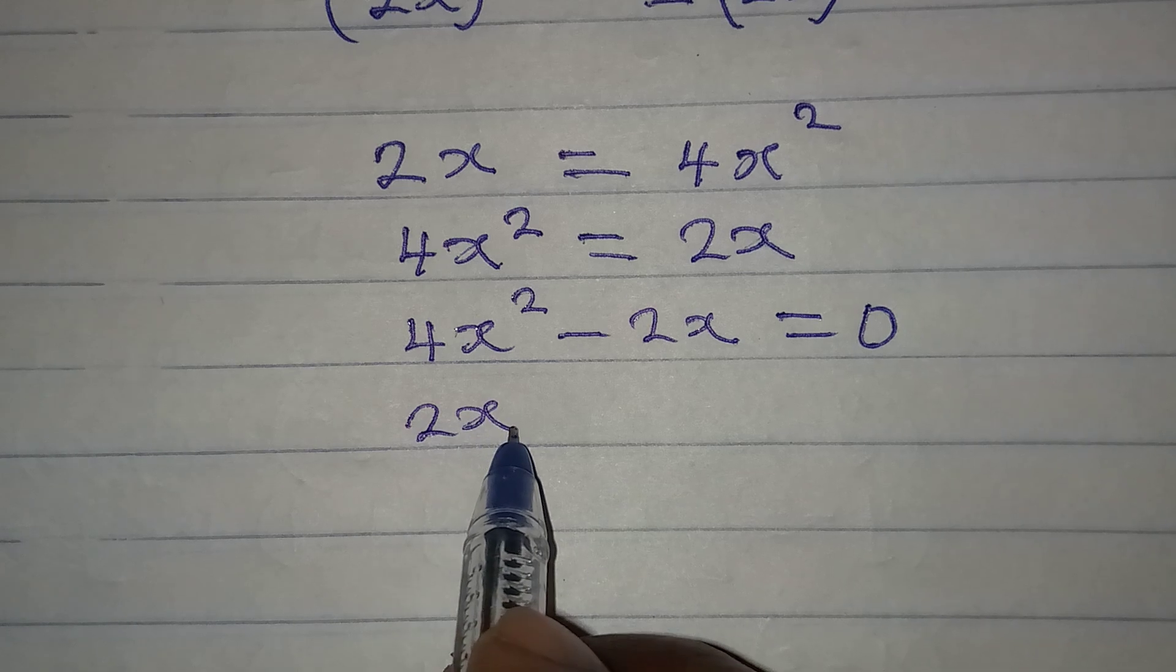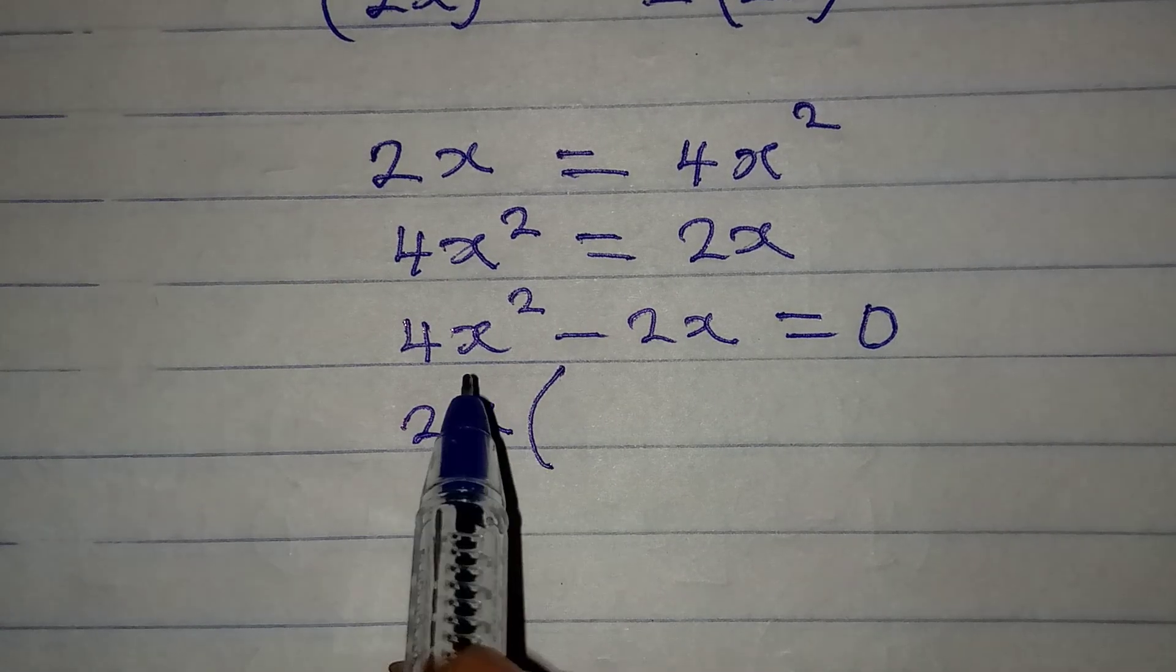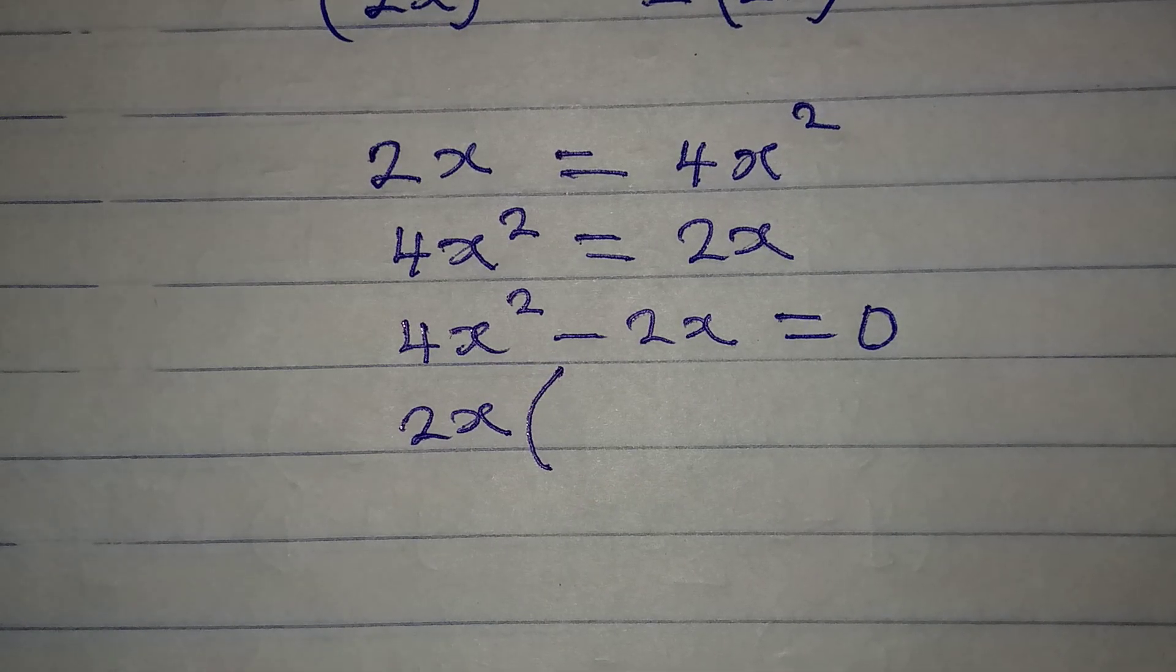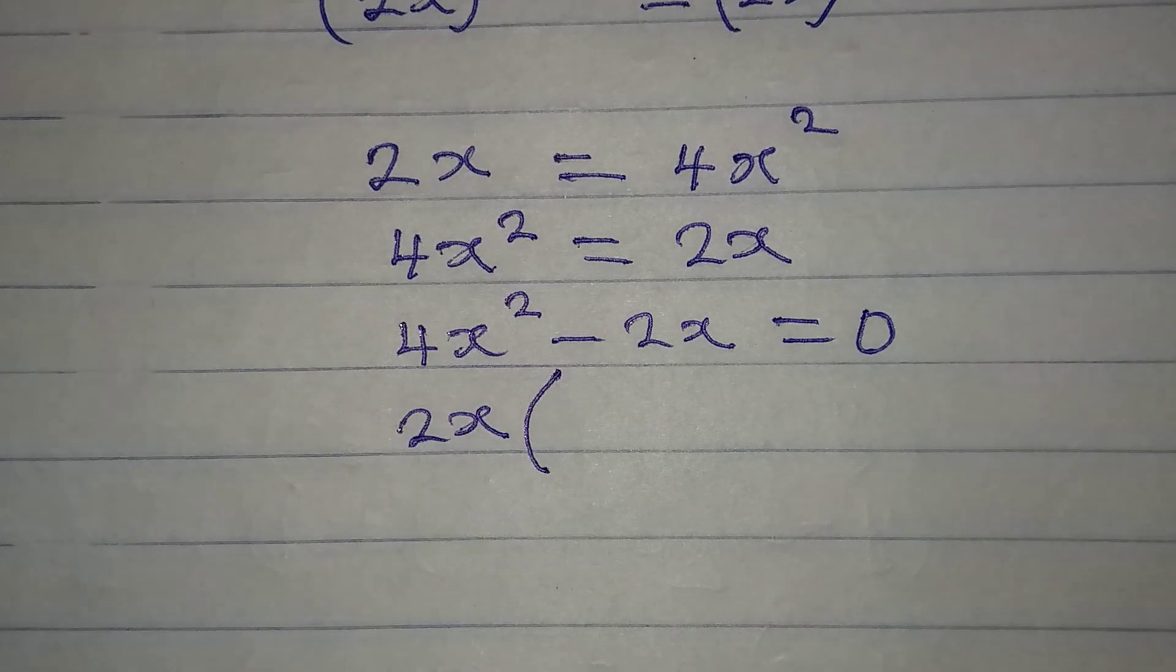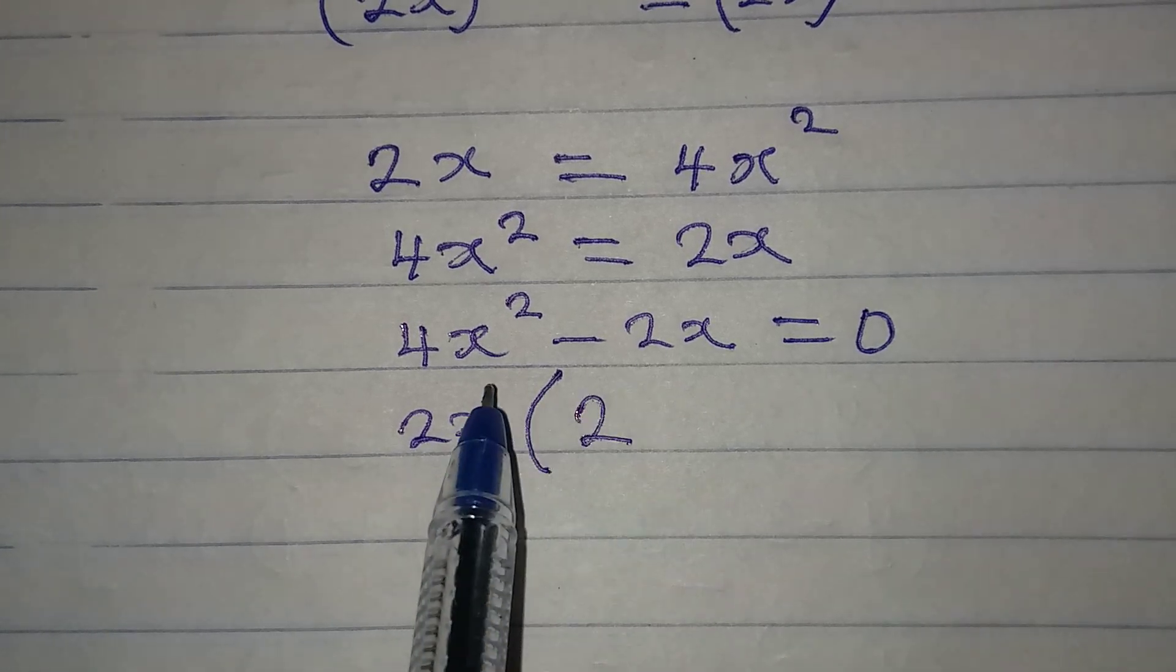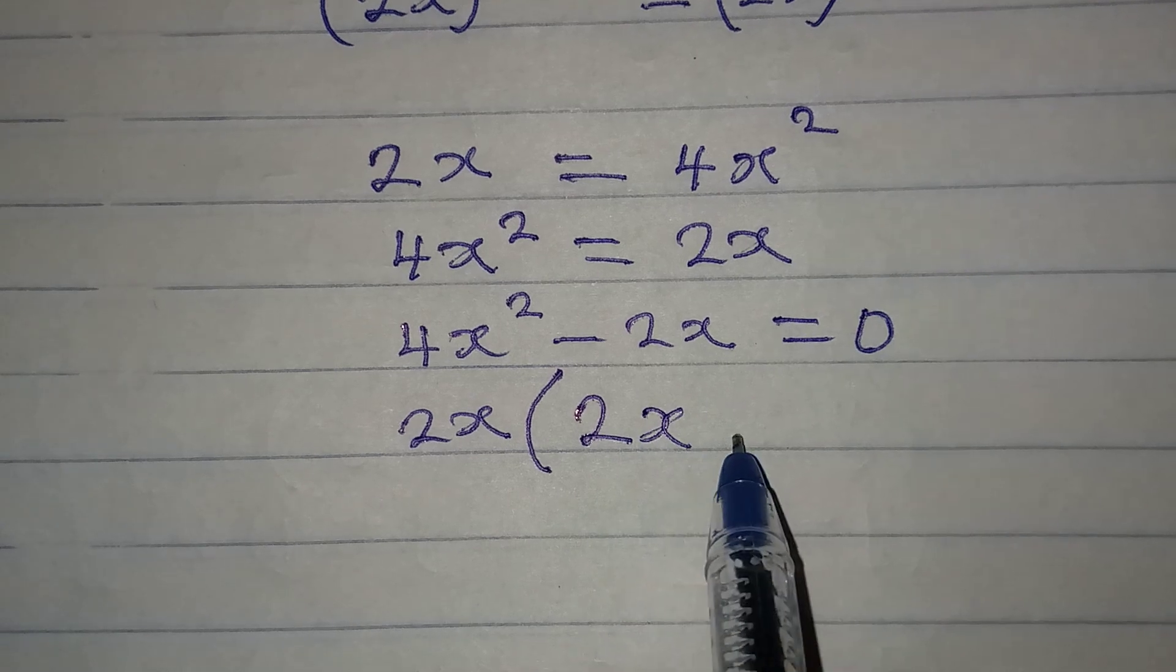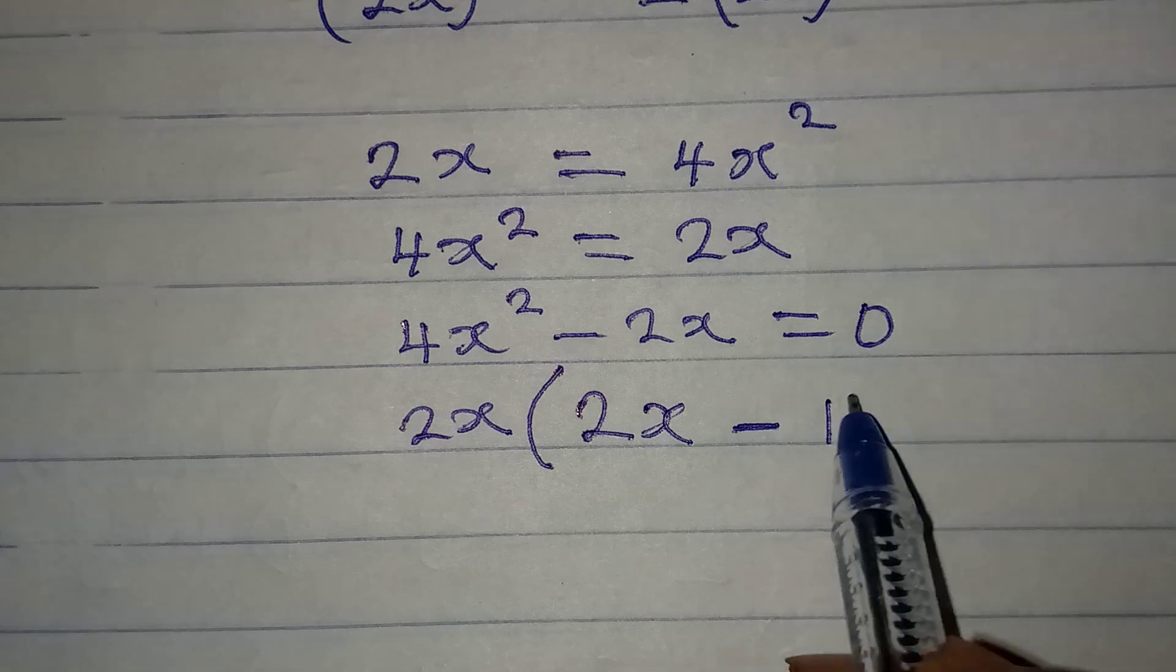What is the common factor? The common factor here is 2x. If we open the bracket, then 4x squared divided by 2x—4 divided by 2 will give 2, then x squared divided by x will give 1x, then minus 2x divided by 2x will be 1.